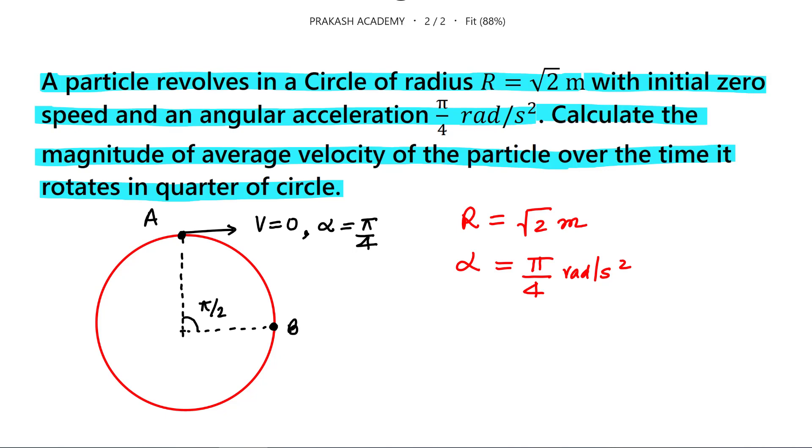So now we have to calculate the average velocity of the particle. So how will you calculate this? I will give you a hint: average velocity is total displacement by total time. So you can use this formula to calculate the average velocity. Let us take a few minutes of time, pause the video and solve this problem.